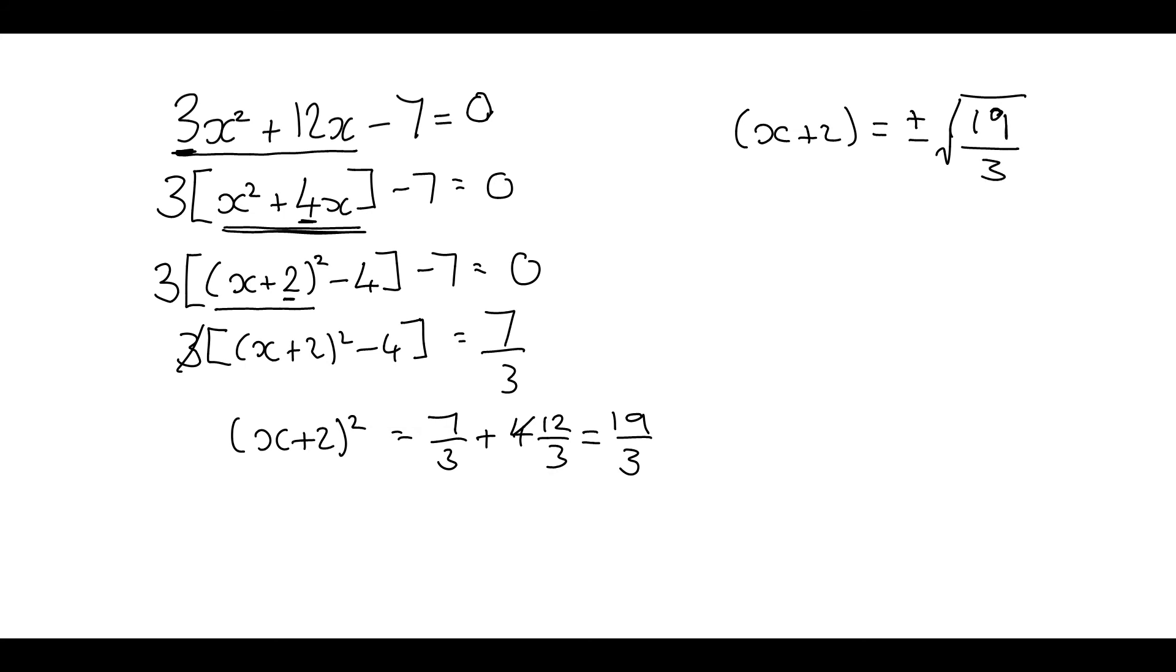So I now want to get rid of the adding 2. So I'll subtract 2 from both sides. So that's x equals minus 2 plus or minus the square root of 19 over 3.